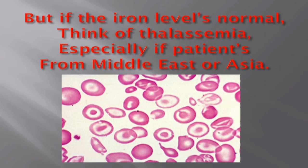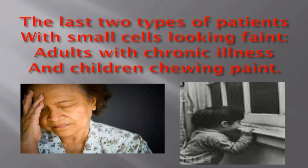Especially if patients are from the Middle East or Asia. The last two types of patients with small cells looking faint: adults with chronic illness, and children chewing paint.